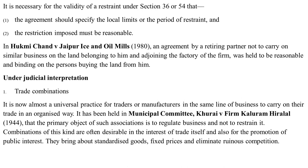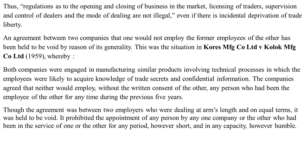Turning to judicially created exceptions, the first is trade combinations. It is now almost universal practice for traders and manufacturers in the same line of business to carry on trade in an organized way. In Municipal Committee Khurai vs. Firm Khalkaluram Hiralal, it was held that the primary object of such associations is to regulate business and not to restrain it. Combinations of this kind are often desirable in the interest of trade and for promotion of public interest — they bring about standardized goods, fixed prices, and eliminate ruinous competition. Regulations as to opening and closing of business, licensing of traders, and supervision of dealers are not illegal even if there is incidental deprivation of trade liberty. However, an agreement between two companies that one would not employ former employees of the other has been held void by reason of its generality.